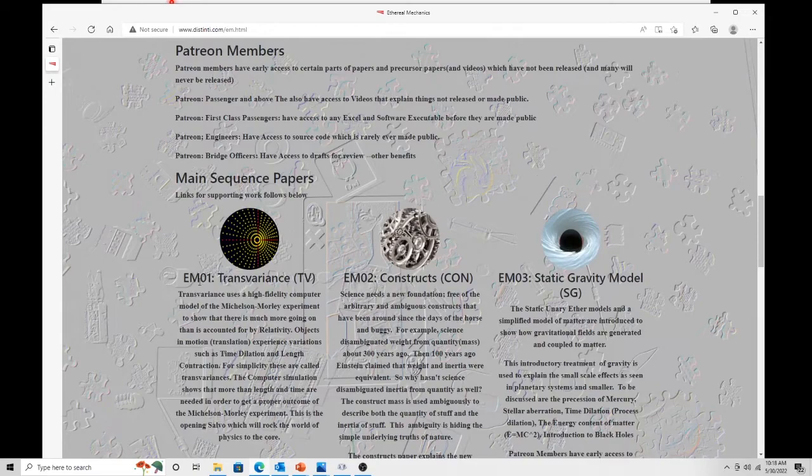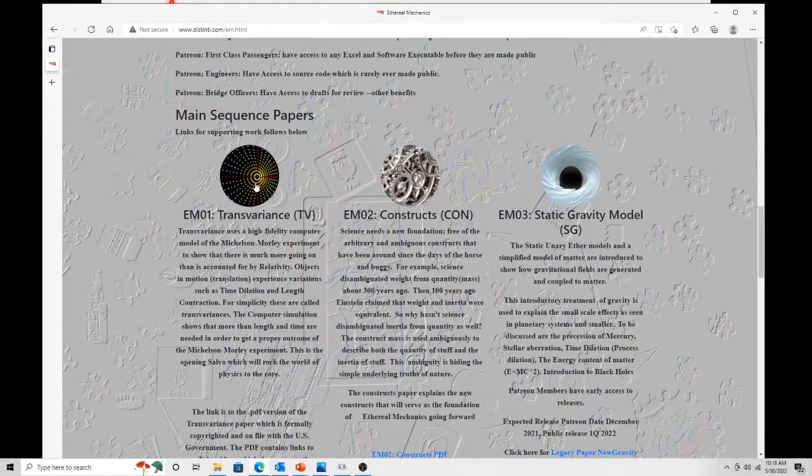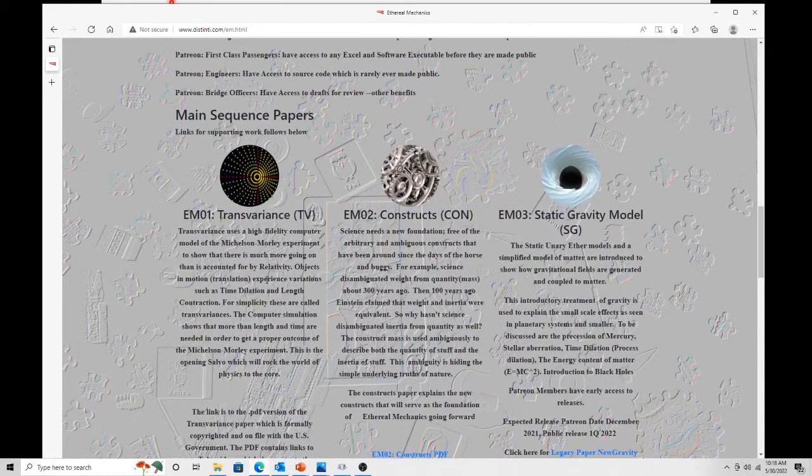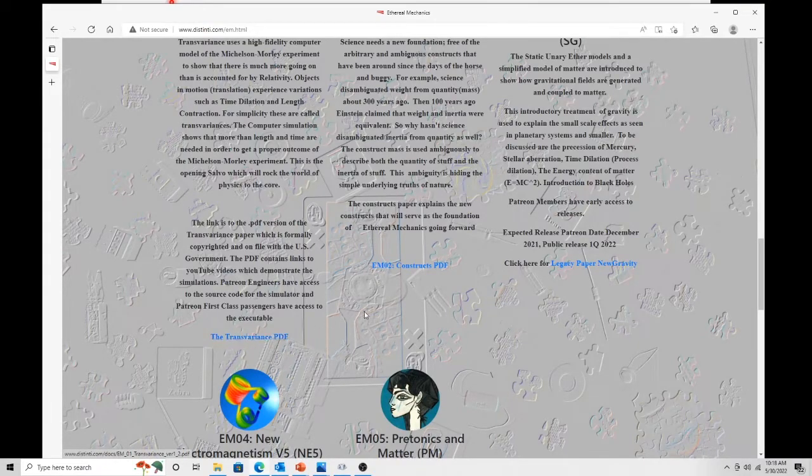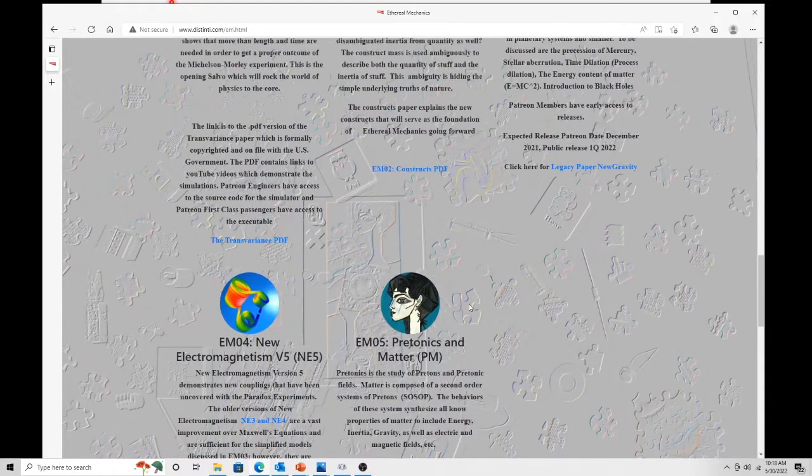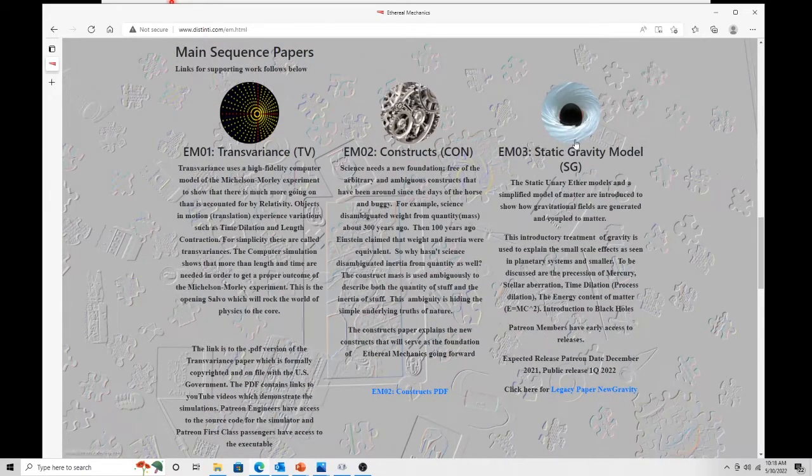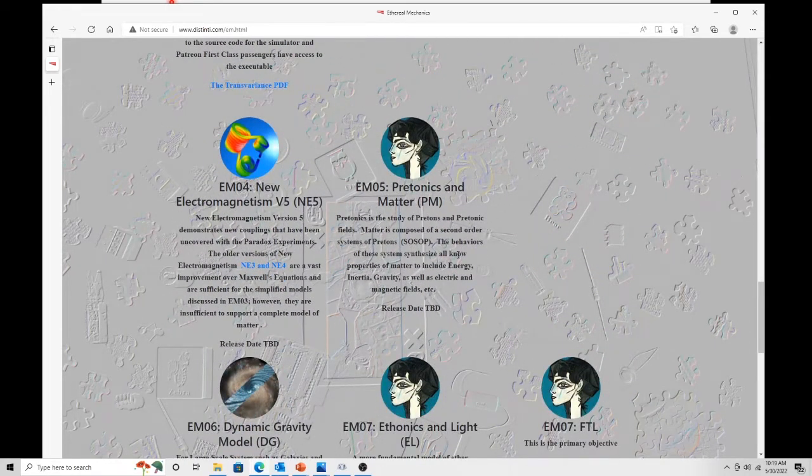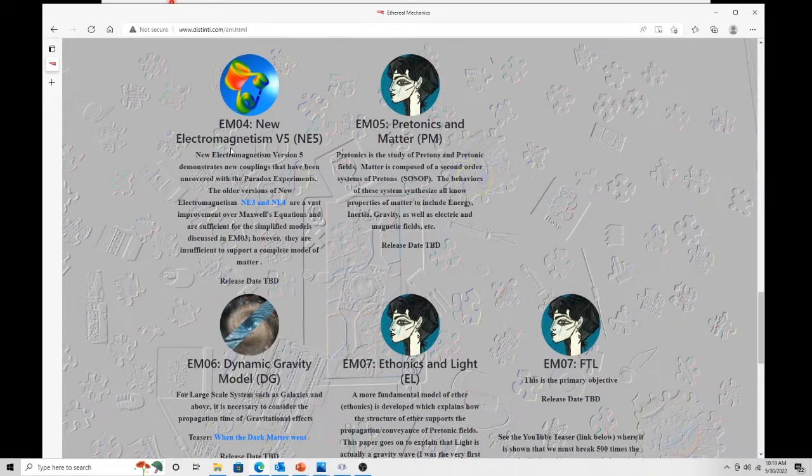So here is EM001 transvariance. I'm thinking these links don't work, so try the link at the bottom of this little cell here. That'll get you the transvariance pdf. This is the constructs pdf. Now there is EM03, the static gravity model, and this is where electrogravity is going to be. The reason why this was a false start in the paper. As I got into this, to write this electrogravity, the problem was I found out I still didn't have all the things with electromagnetism. So this was abandoned until I got all the final electromagnetism done. So EM03 is going to be updated with the electrogravity paper that we're talking about now. I just haven't updated this website yet.